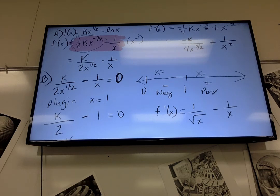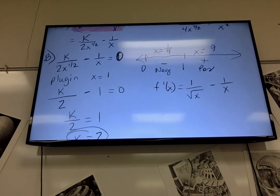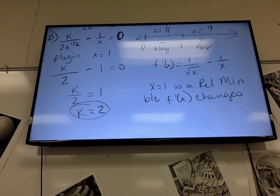Okay, so would that still be negative? Yeah. So one over the square root of one fourth, which is one half. So that's two minus four, that's still negative. And I plug in nine, I get one third minus one ninth, which is still positive. So x equals one is a relative min because f prime of x changes from negative to positive.